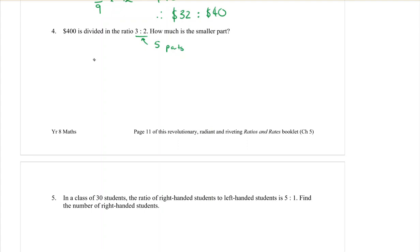So to work out the smaller part, I make it into a fraction: 2 out of the 5, and you multiply that by the amount that you're dividing up, which is $400. If you type that in your calculator, what did you get? $160, perfect. I only had to do the one of them for this one because I only asked for the smaller one. So that's it, that's all I had to do.